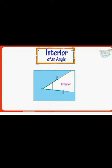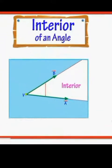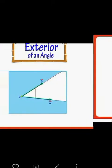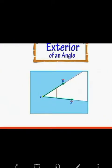Now, the interior of an angle. The region that lies within the angle is the interior part of an angle. You can see here the area shown in white color inside the angle — that is the interior part. The points lying inside the angle form the interior of an angle. The region shown in sky blue color that lies outside the angle forms the exterior part of an angle. The points lying outside the angle form the exterior of an angle.